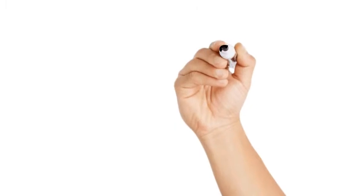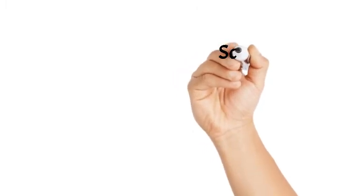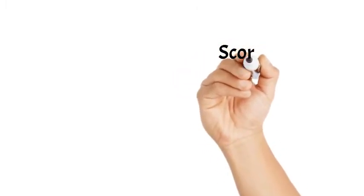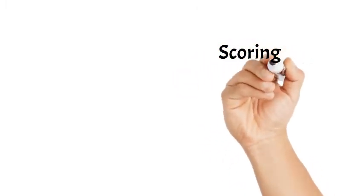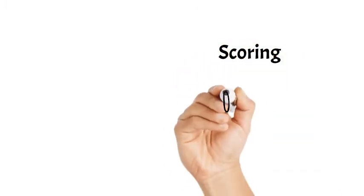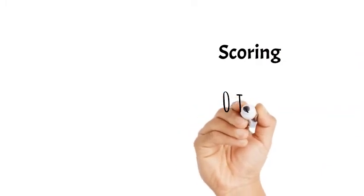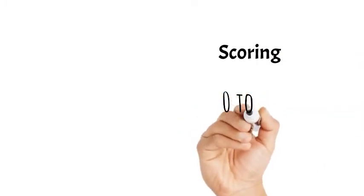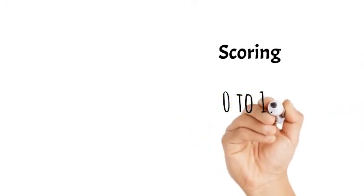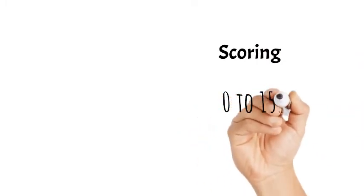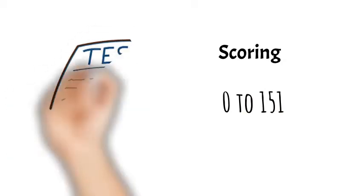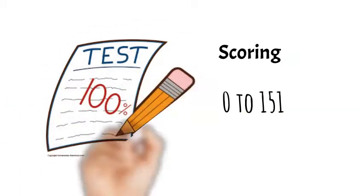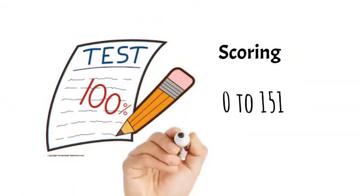A person taking this test can obtain a score from 0 to 151. Lower scores on the DAS are indicative of having a problem, while higher scores indicate little or no problem. The higher the score, the better the person's adjustment to the marriage.